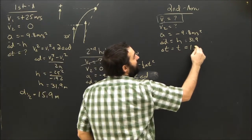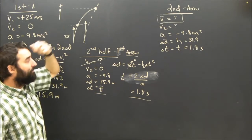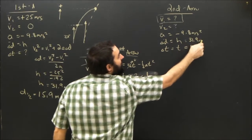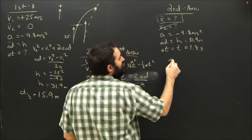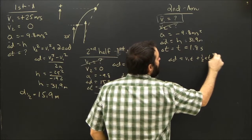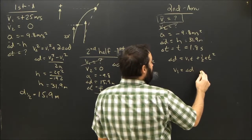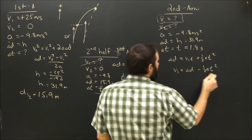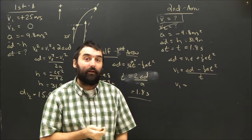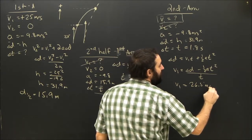It took the first arrow 1.8 seconds to get from the midpoint to the top. So it's going to take the second arrow the same 1.8 seconds to cover the full 31.9 meters. Using ΔD = V1·T plus one-half·A·T², rearranging for V1 gives: V1 = (ΔD minus one-half·A·T²) all over T. Working this out gives approximately 26.5 meters per second.